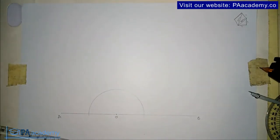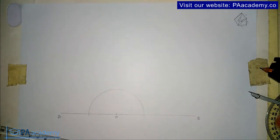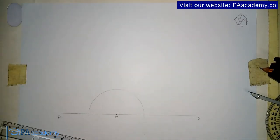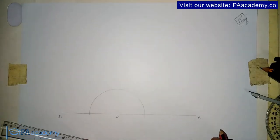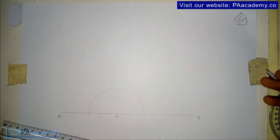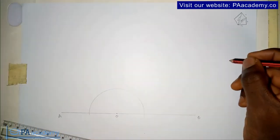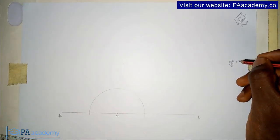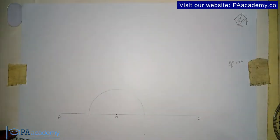Now this semicircle, we are going to be dividing it into five equal parts because what we are constructing is a pentagon. If you are constructing a regular polygon with seven sides, then you would divide this semicircle into seven equal parts — this principle works for any polygon where you are given the length of the diagonal and not the length of the sides. Since we are working with a pentagon, that's five sides, we divide 180 by five, which gives us 36. So the interval is going to be 36 degrees.